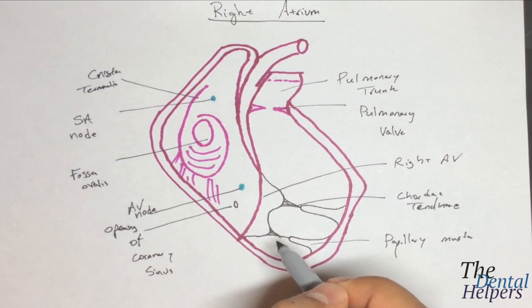And then we have the atrioventricular opening, which is basically the entrance from the right atrium to the right ventricle, and it's guarded by a valve located in the left ventricle.